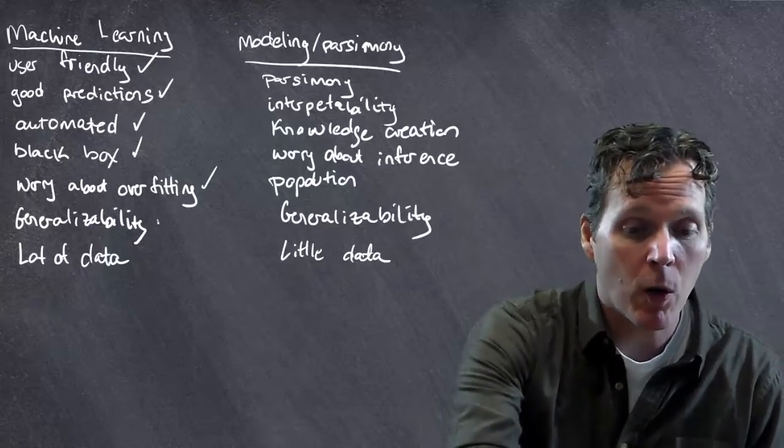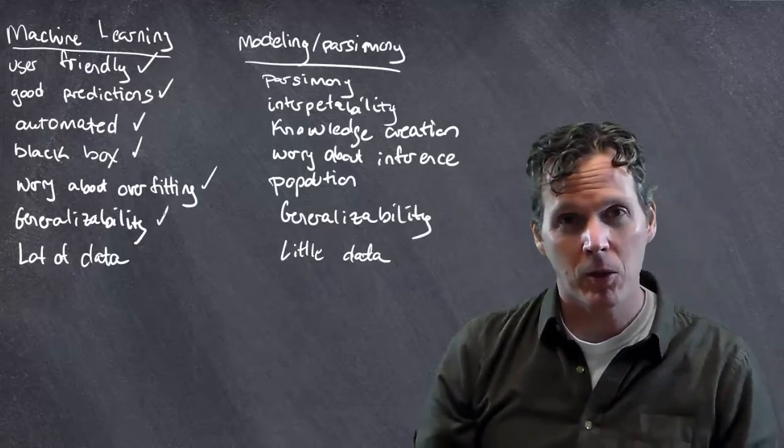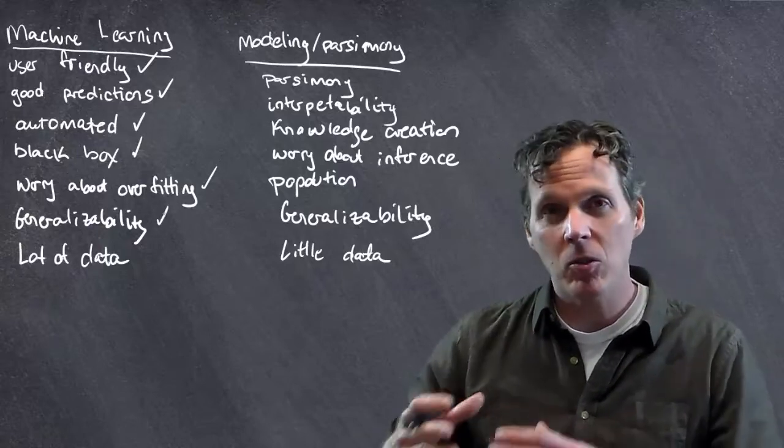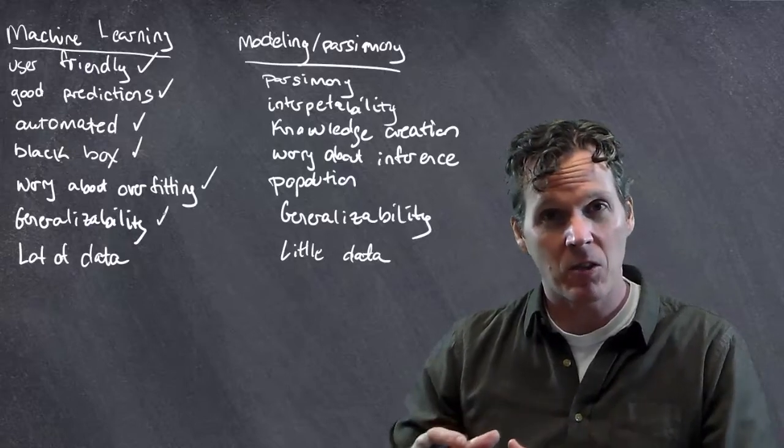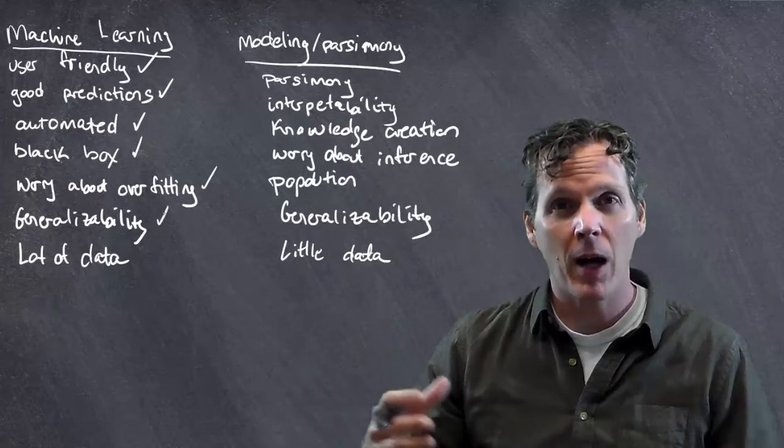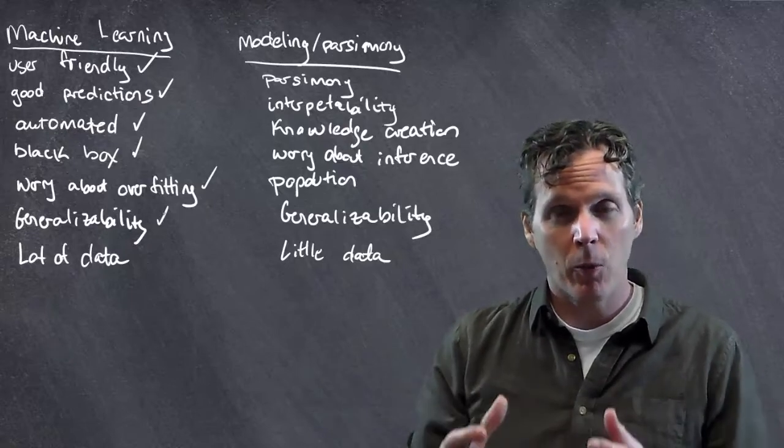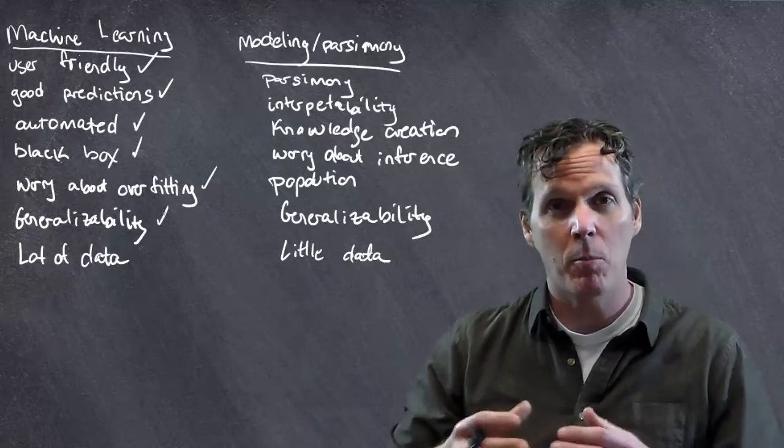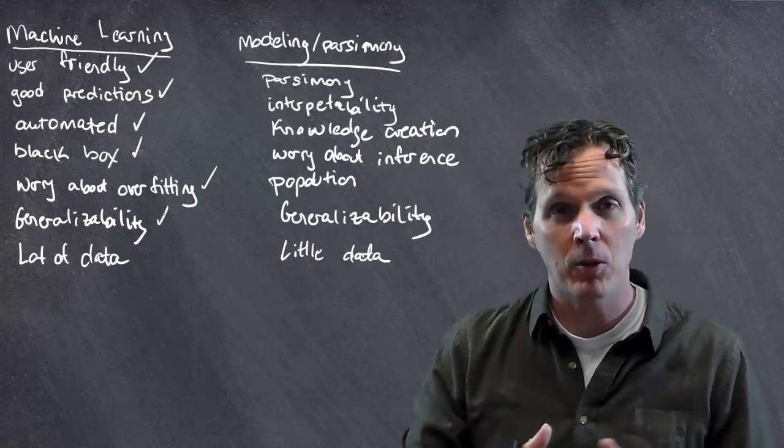A problem that doesn't get talked about quite as much is this idea of generalizability. Generalizability from a classical statistical test is given by the connection of your data to a population-level model, and that theoretical construct is what's helping give you generalizability. If the model is correct, then you're getting generalizability.